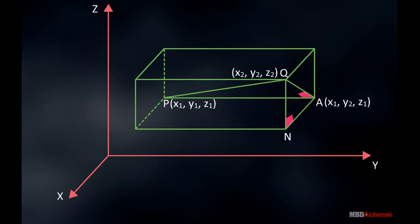As we move from point A to N, it means displacement about X axis. That means, only X coordinate changes. So, coordinate of N are X2, Y2, Z1.